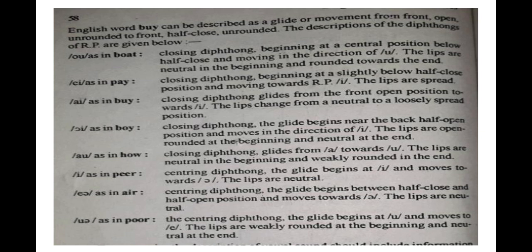/eɪ/ as in 'pay': closing diphthong, beginning at a slightly below half close position and moving towards /ɪ/; the lips are spread. /aɪ/ as in 'buy': closing diphthong, glides from the front open position towards /ɪ/; the lips change from neutral to a loosely spread position. /ɔɪ/ as in 'boy': closing diphthong, the glide begins near the back half open position and moves in the direction of /ɪ/; the lips are open rounded at the beginning and neutral at the end. /aʊ/ as in 'how': closing diphthong, glides from /a/ towards /ʊ/; the lips are neutral in the beginning and weakly rounded at the end.